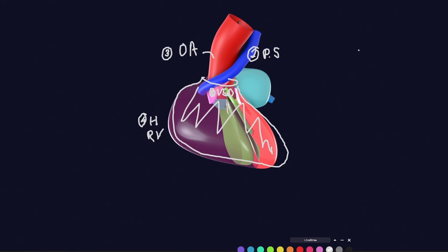It is named after a French physician who first described these four things together. To summarize: tetralogy of Fallot consists of pulmonary stenosis due to abnormal formation of the aorticopulmonary septum, ventricular septal defect, overriding of the aorta such that it opens just above the VSD receiving blood from both ventricles, and secondary hypertrophy of the right ventricle. You can remember these with the acronym PVOS.